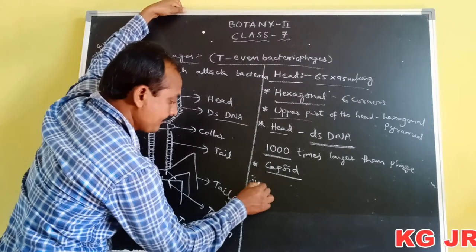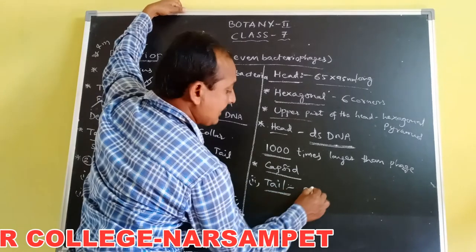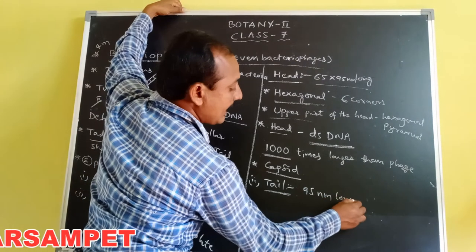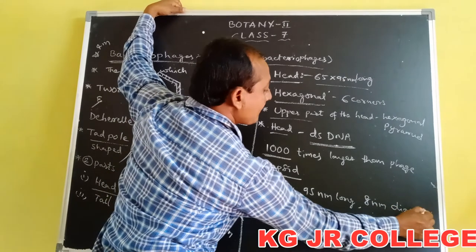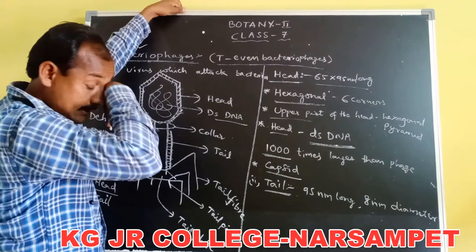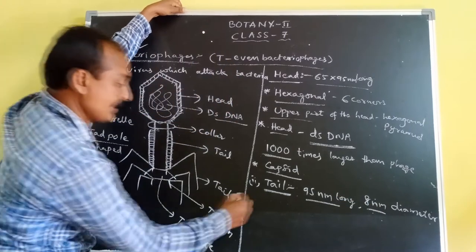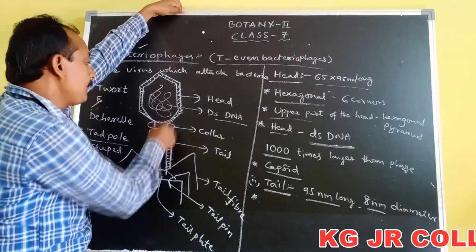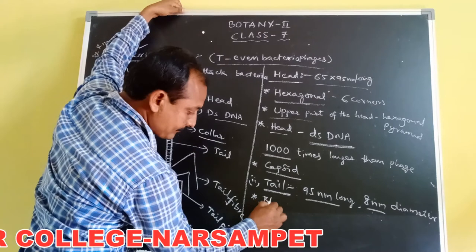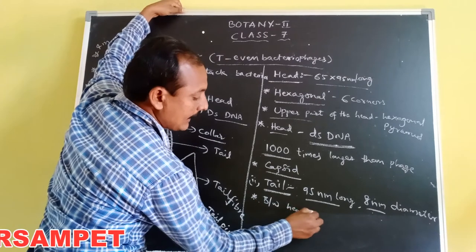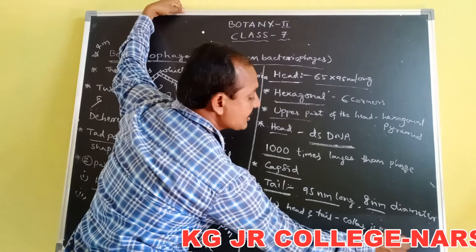Second part: tail. The tail is about 95 nanometers long and 8 nanometers in diameter. Between the head and tail, a collar is present. The function of the collar is not known.